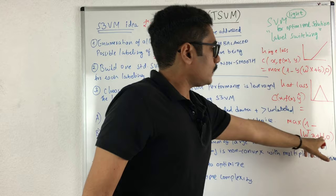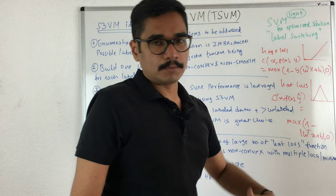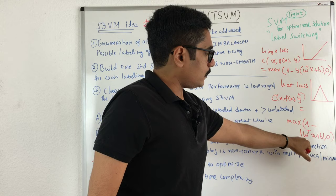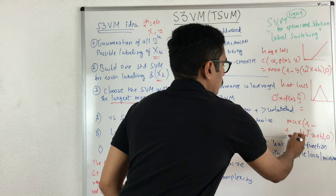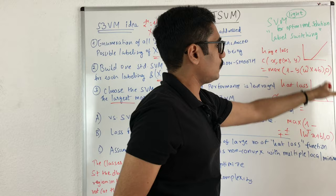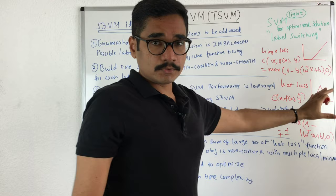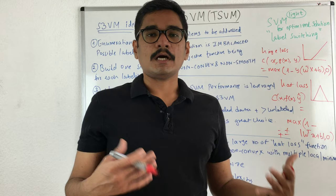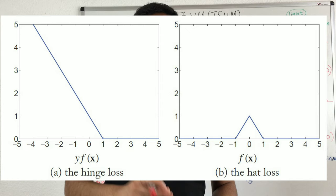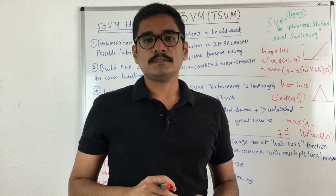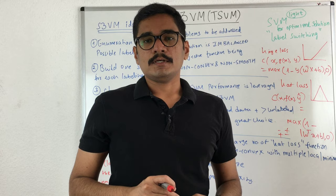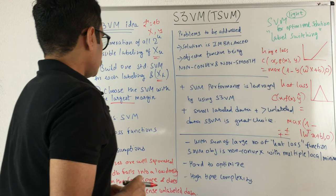Removing the modulus sign gives a plus-minus or minus-plus, representing both sides — hence the hat shape with one side positive and one side negative. That is the intuition behind the hat loss. On screen you can see the two different graphs showing the difference between hinge loss and hat loss.